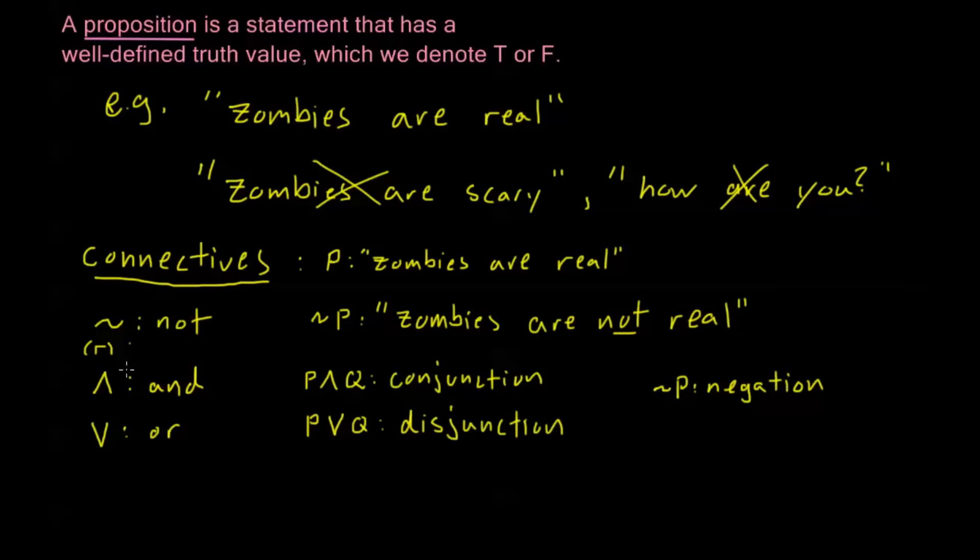Okay. So I'm just going to give you a basic example of all of these. I'm going to go ahead and clear my board. Let's just say that my statement P is the statement, it is daytime. And my proposition Q is the statement, it is raining. So using my connectives, I have this not P. This would be equivalent to the statement, it is not daytime.